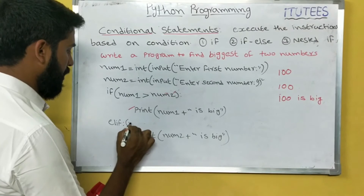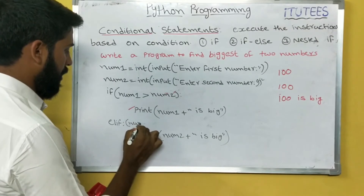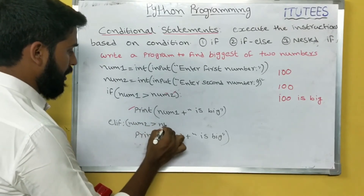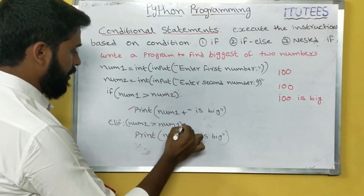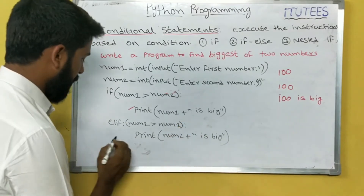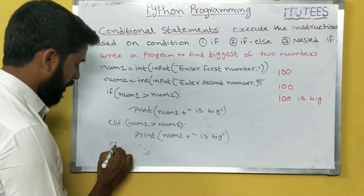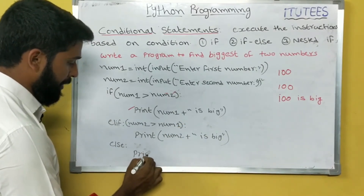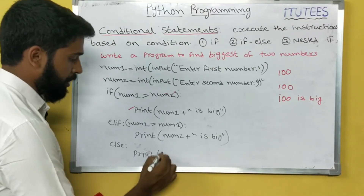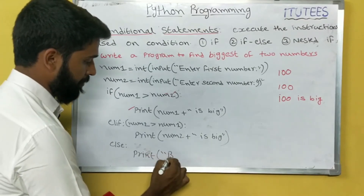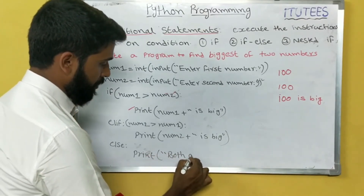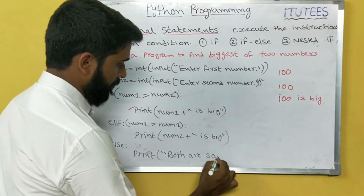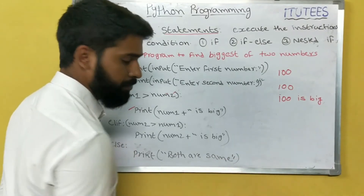Now you can rectify this using nested else if. Add an else if condition: if number2 is greater than number1, then print 'number2 is bigger'; else print 'both are same'.